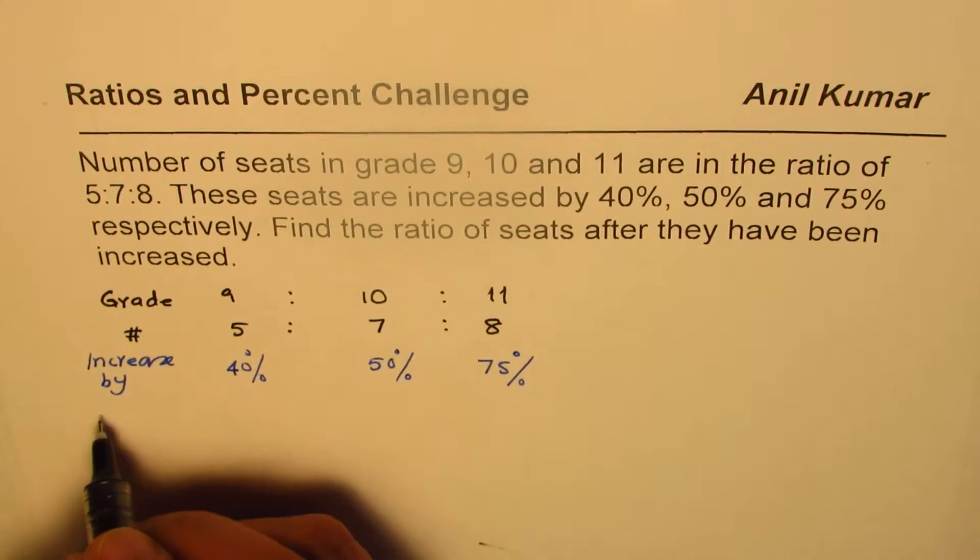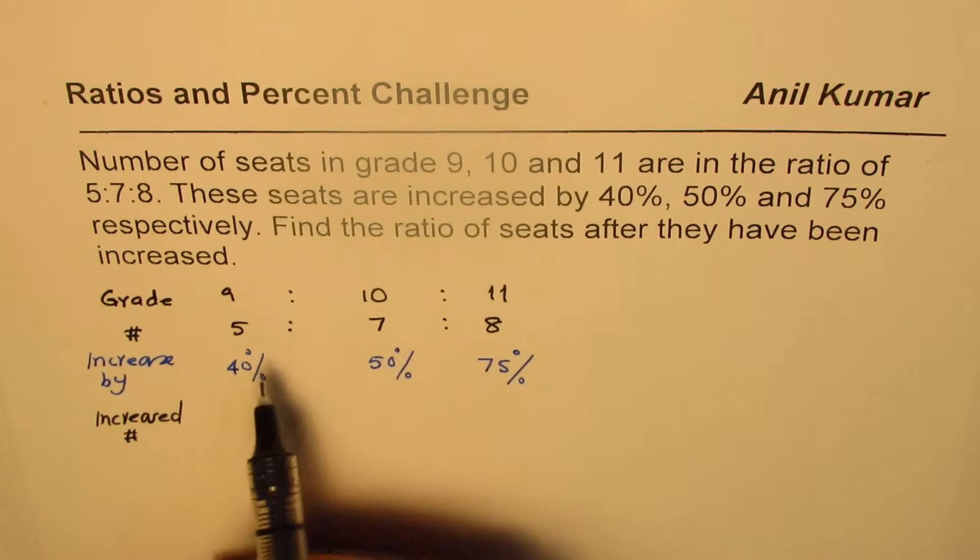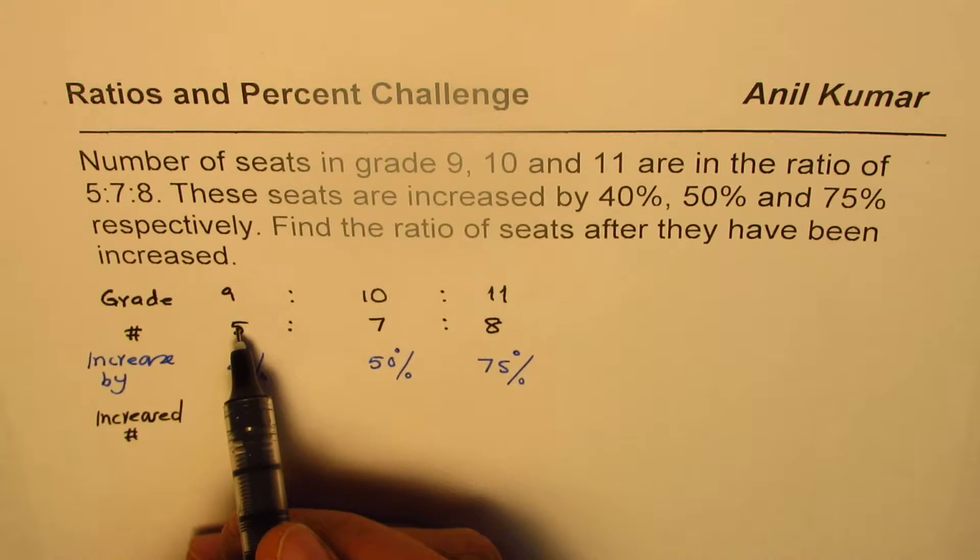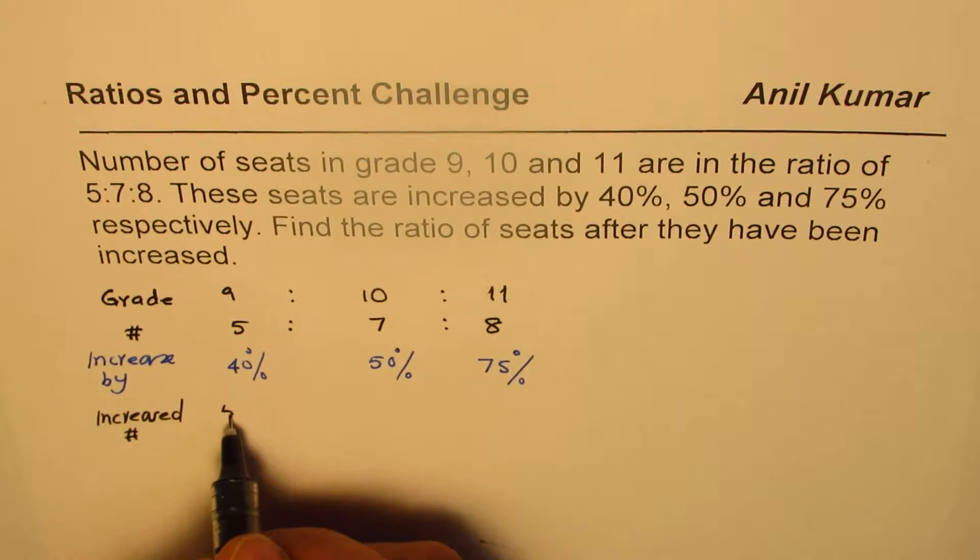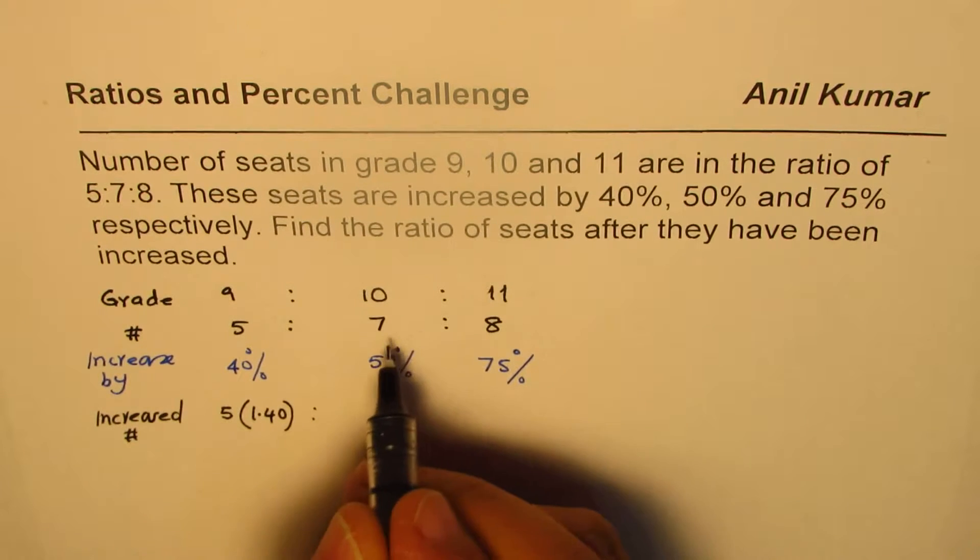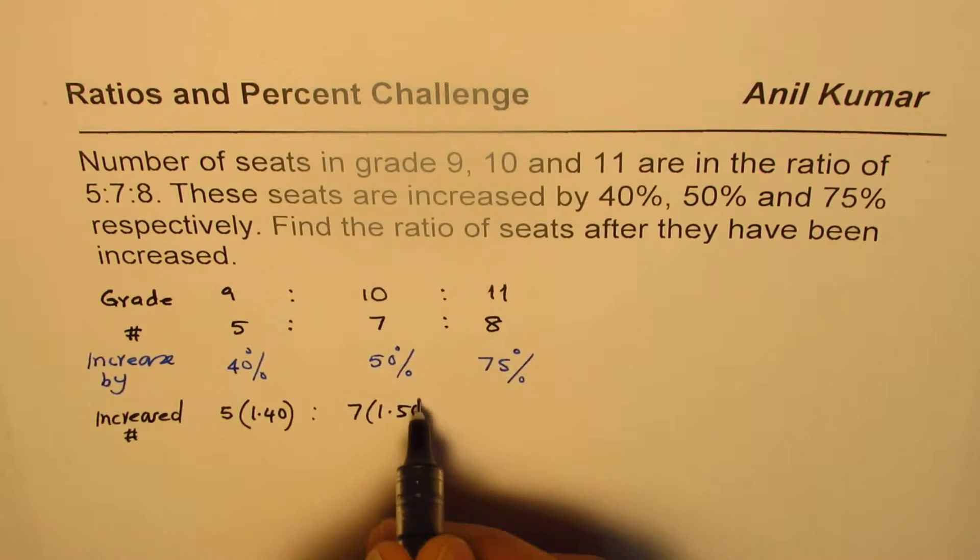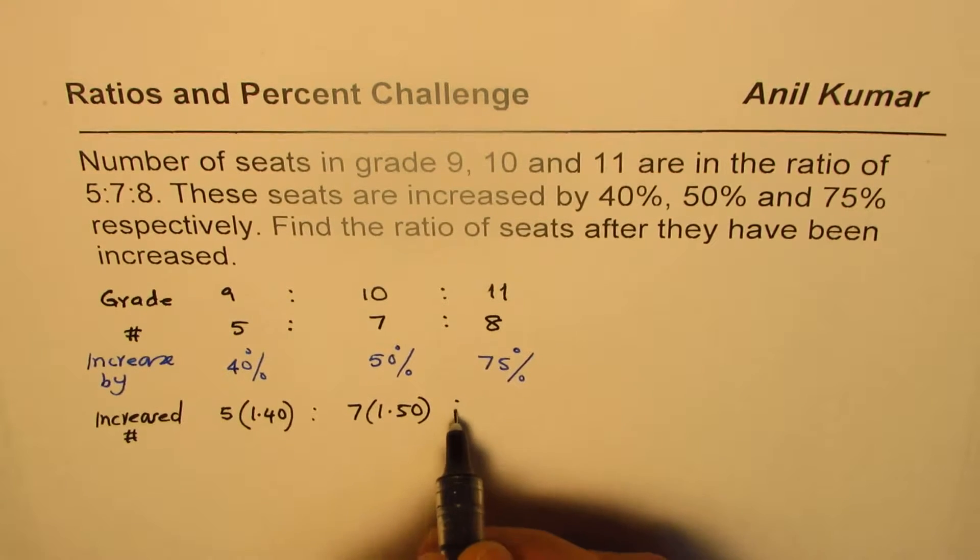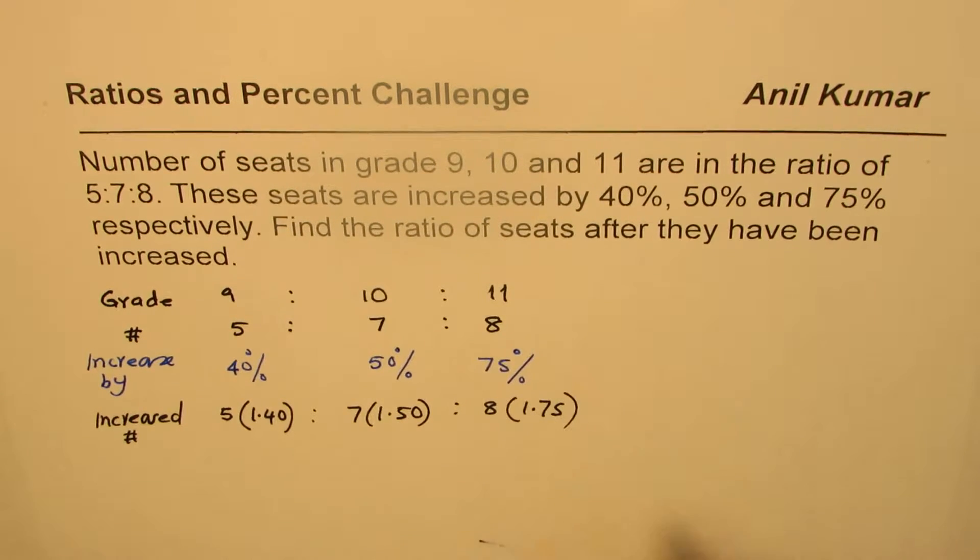Let me write increased number now. So we have increased number of students. So that increased number will be, you have to multiply this number by 1.40 because it has been increased by 40%. So it is 5 times 1.40. Here, this number will be 7 times 1.50 and this number will be 8 times 1.75. Do you understand increased by meaning?